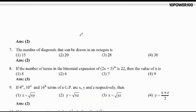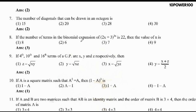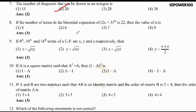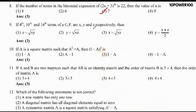Question number 7 is based on diagonals of an octagon — a general topic. The number of diagonals that can be drawn in an octagon: option 2 is the right answer. Question number 8 covers 3D geometry and binomial theorem: option 3 is the right answer. Question number 9 is on GP: option 2 is the right answer.